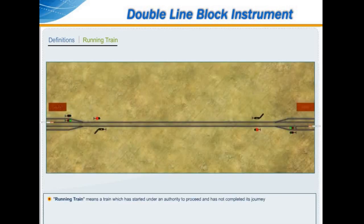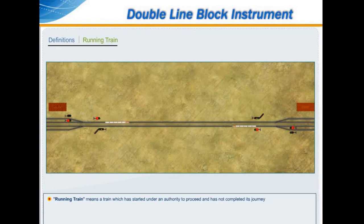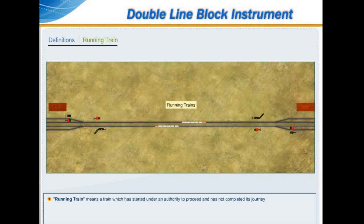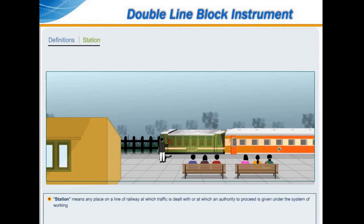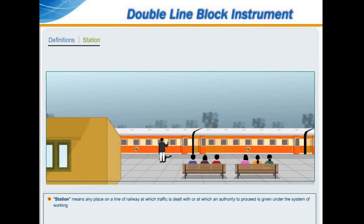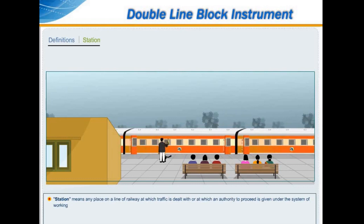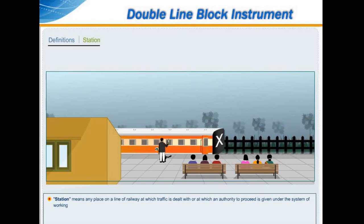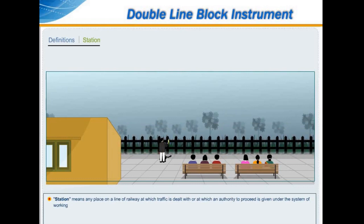A running train means a train which has started under an authority to proceed and has not completed its journey. A station means any place on a line of railway at which traffic is dealt with or at which an authority to proceed is given under the system of working.